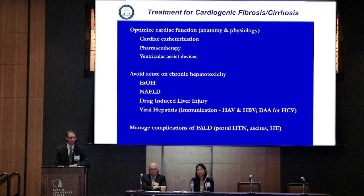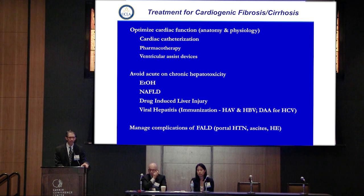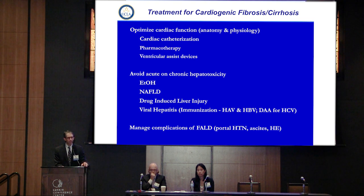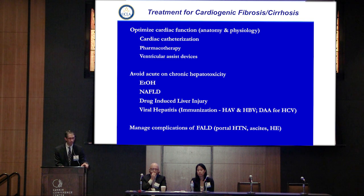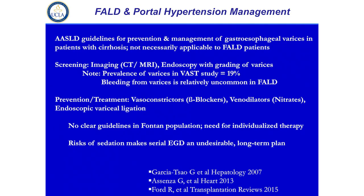I'll highlight some of the treatments briefly that we can use for cardiogenic fibrosis. Our cardiology colleagues will help with decision-making and optimization of cardiac function. We then focus on avoiding second hits — alcohol abstinence, trying to stay as active as possible, and healthy diet to avoid non-alcoholic fatty liver disease, looking at medications that have potential hepatotoxicity, making sure our patients show immunity to hepatitis A and B, and for those with HCV, the direct-acting antivirals are extremely effective in a short course with minimal complications. And then managing complications such as portal hypertension — we know that can occur in roughly 20 percent of Fontan patients.